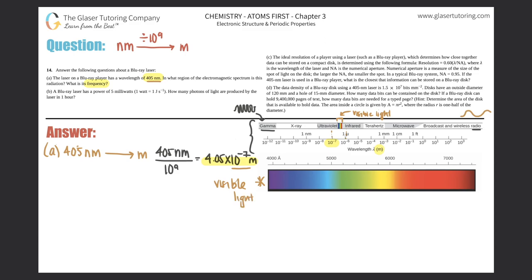The visible light section of the spectrum starts at around 4000 angstroms, which is the same as 4 × 10⁻⁷ meters, and goes up to about 7.4 × 10⁻⁷ meters. Our answer is 4.05 × 10⁻⁷, which is just a little bit over 4000 angstroms but still within the visible light spectrum. So this radiation is in the visible light category.